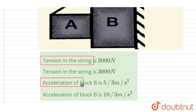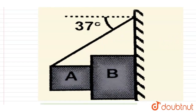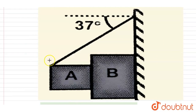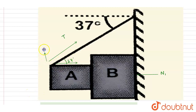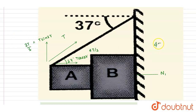To find the tension in the string and acceleration of block B, let us draw the FBD. If we take the two blocks as a system, the tension force and normal reaction by the surface act on it. The tension T is at 37 degrees, so its components are T cos 37° = 4T/5 and T sin 37° = 3T/5.